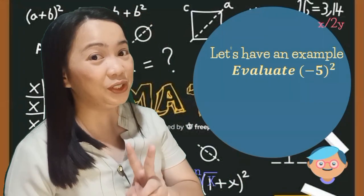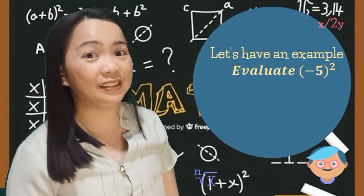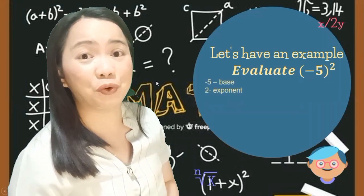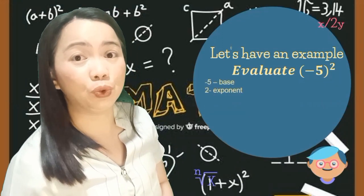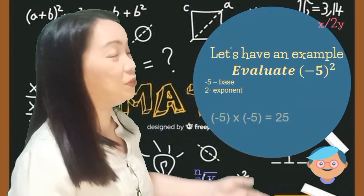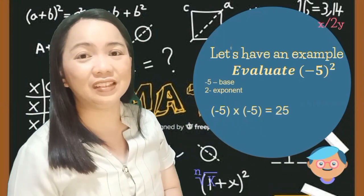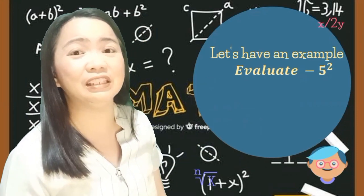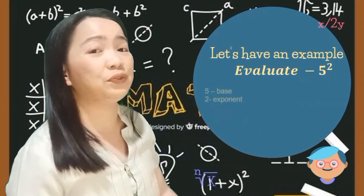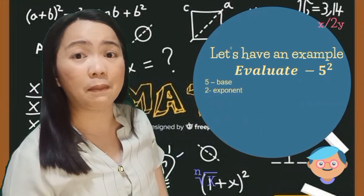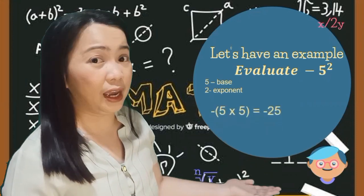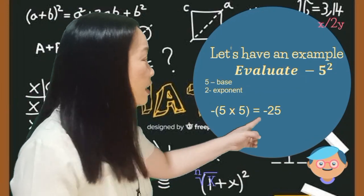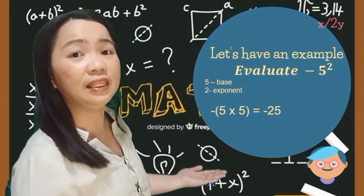Let's look at two examples comparing negative numbers. The first is written inside parentheses: the quantity negative 5 squared. The base is negative 5 and the exponent is 2. In expanded form, that is negative 5 times negative 5, giving a positive 25. In the second example, it is not written inside parentheses: negative 5 squared. Here the base is 5 and the exponent is 2. We compute 5 times 5 equals 25, then affix the negative symbol, so the answer is negative 25.